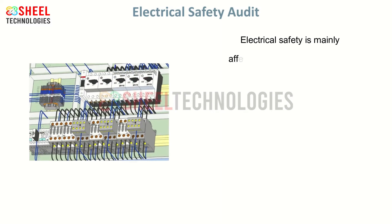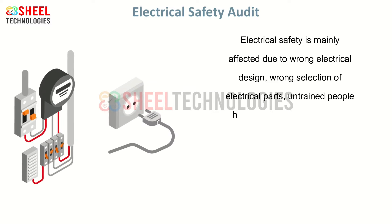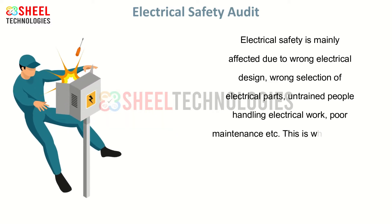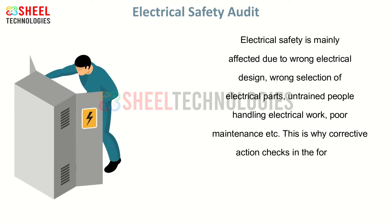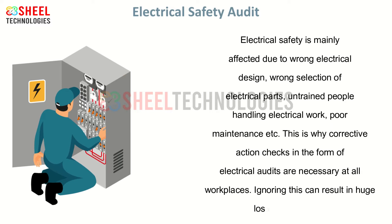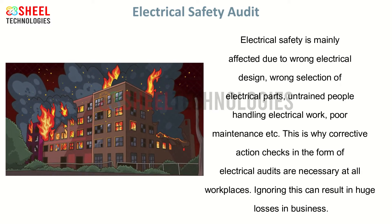Electrical safety is mainly affected due to wrong electrical design, wrong selection of electrical parts, untrained people handling electrical work, and poor maintenance. This is why corrective action checks in the form of electrical audits are necessary at all workplaces. Ignoring this can result in huge losses in business.